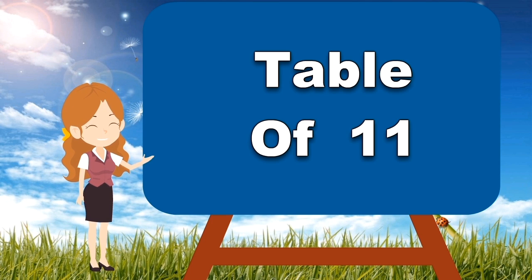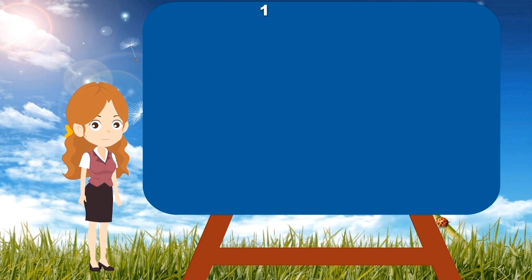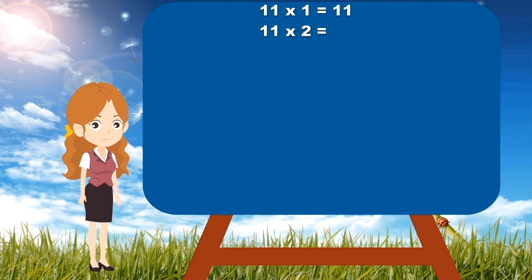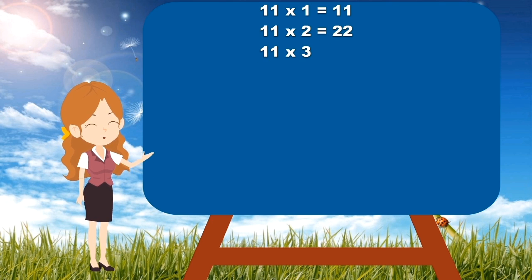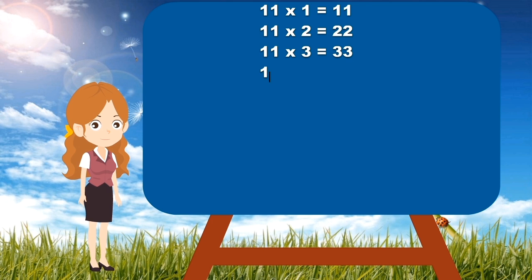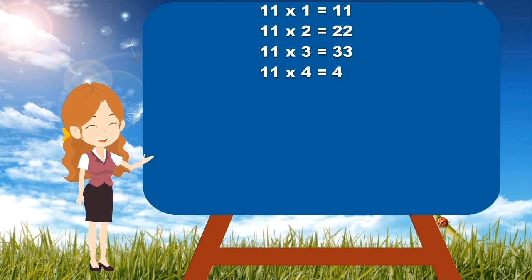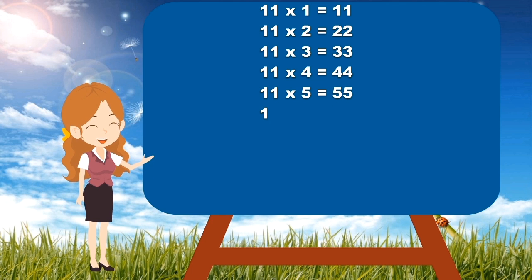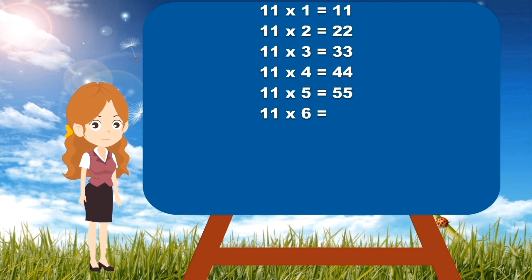Let's start. 11 times 1 is 11. 11 times 2 is 22. 11 times 3 is 33. 11 times 4 is 44. 11 times 5 is 55. 11 times 6 is 66.